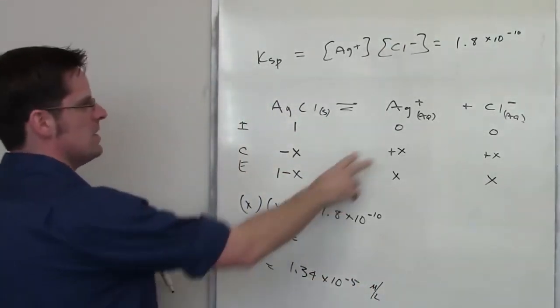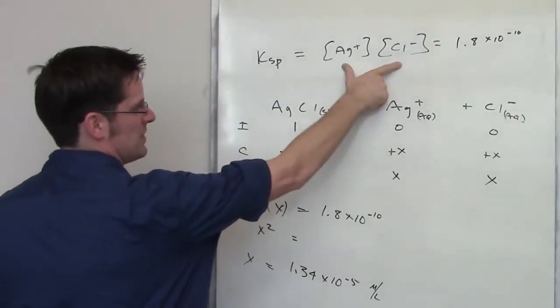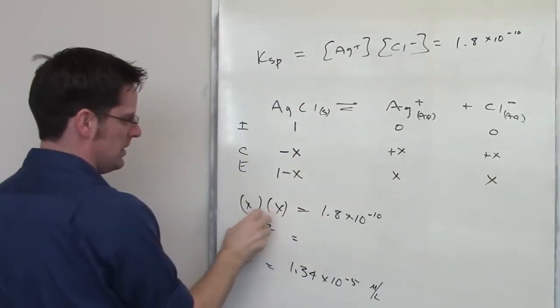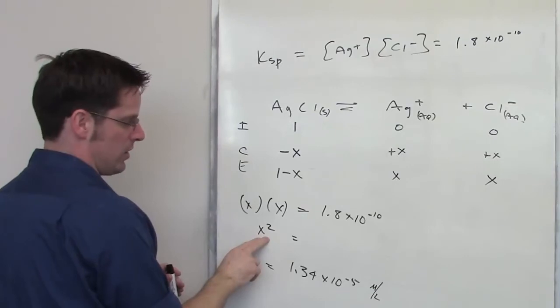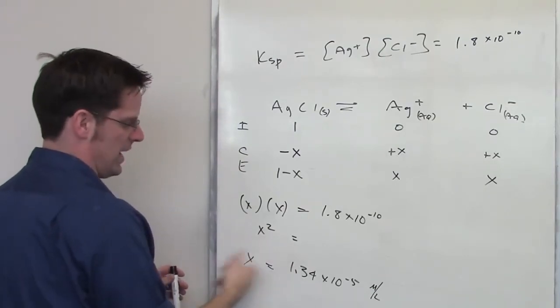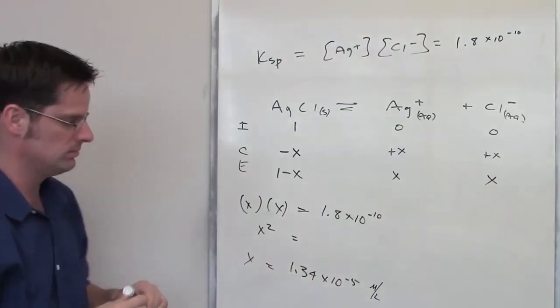And the reason is because I've got moles per liter for each of these, and they're multiplied together. So that gives me moles per liter squared, and then I take the square root of it to solve for X, and it leaves me back moles per liter. So there you go.